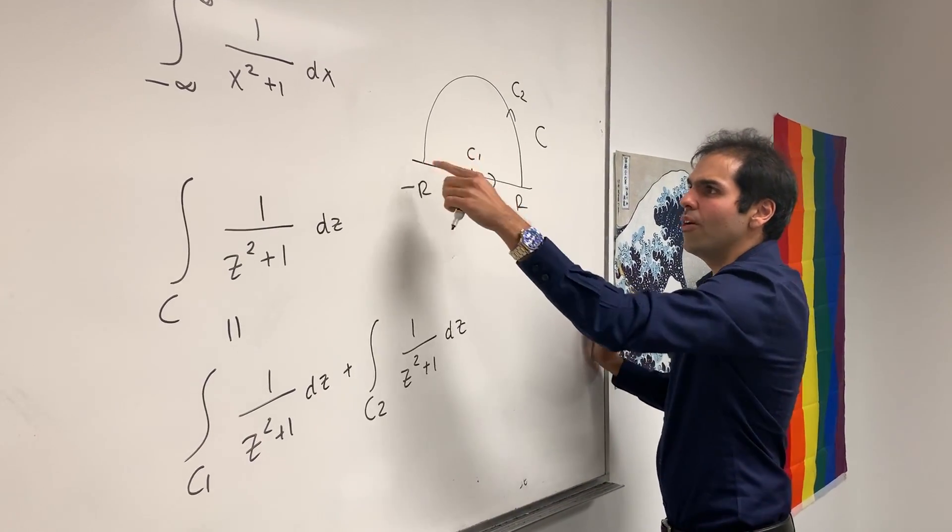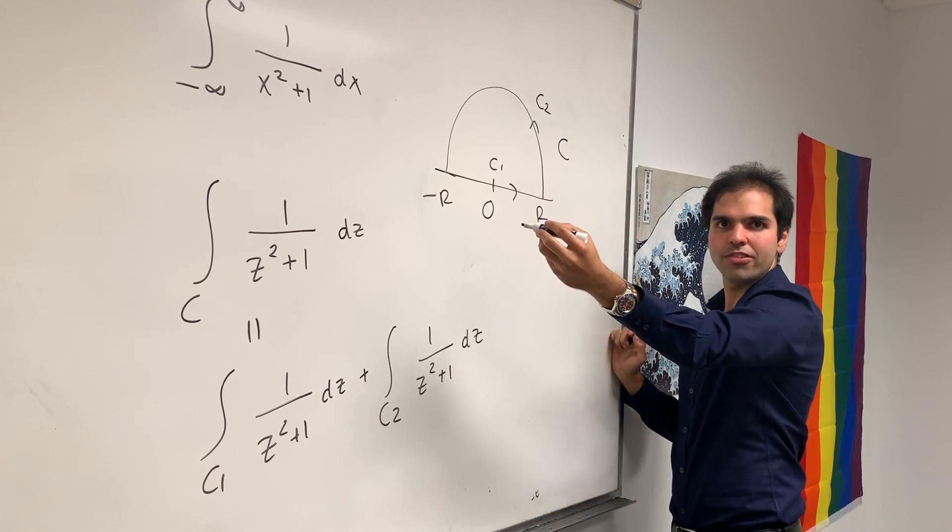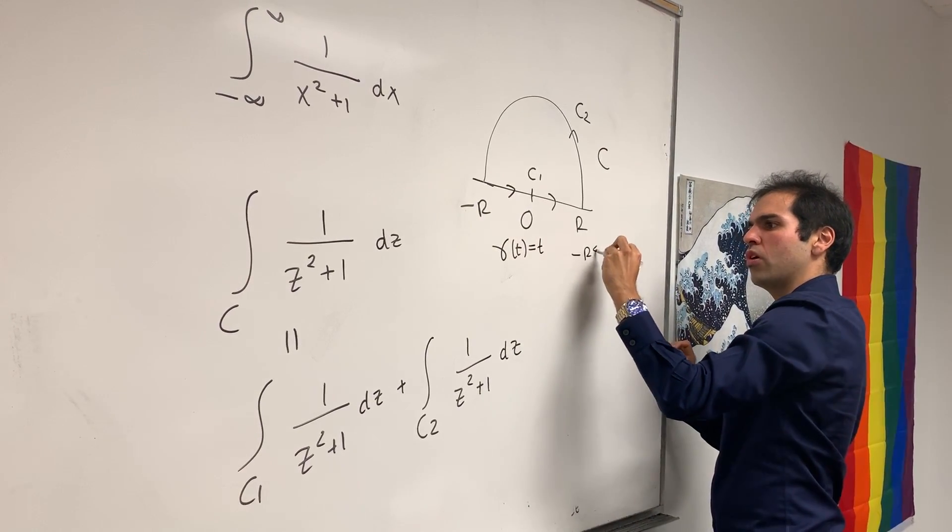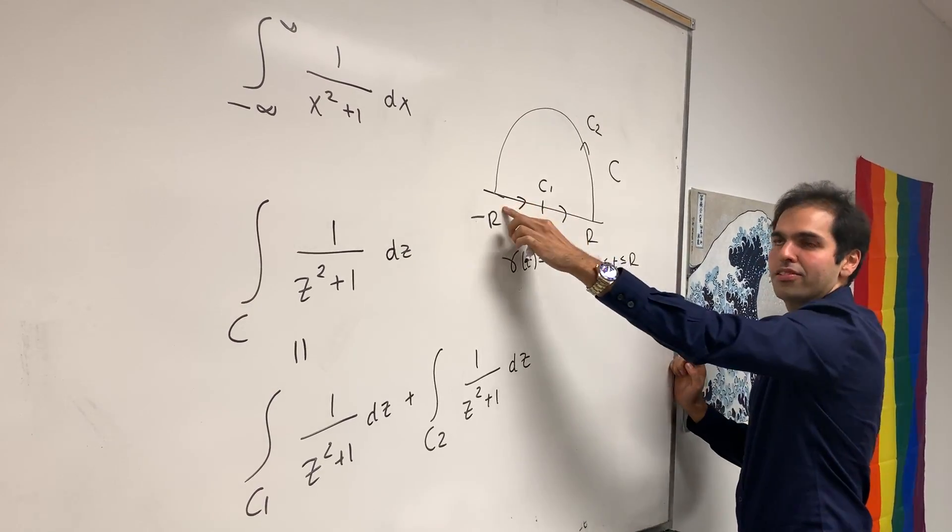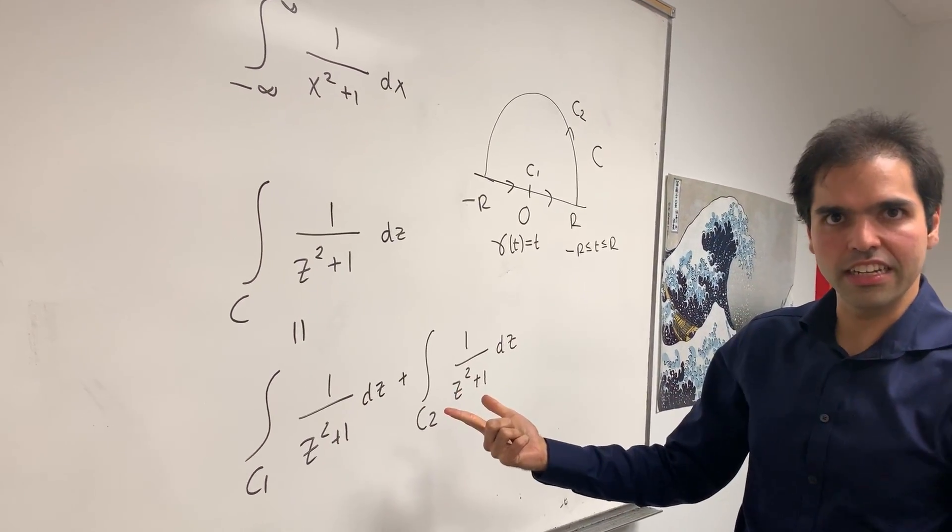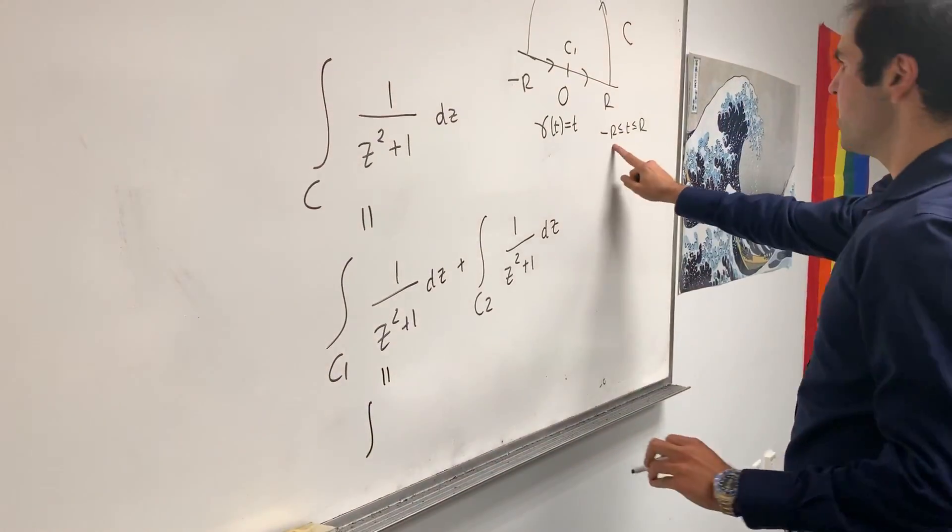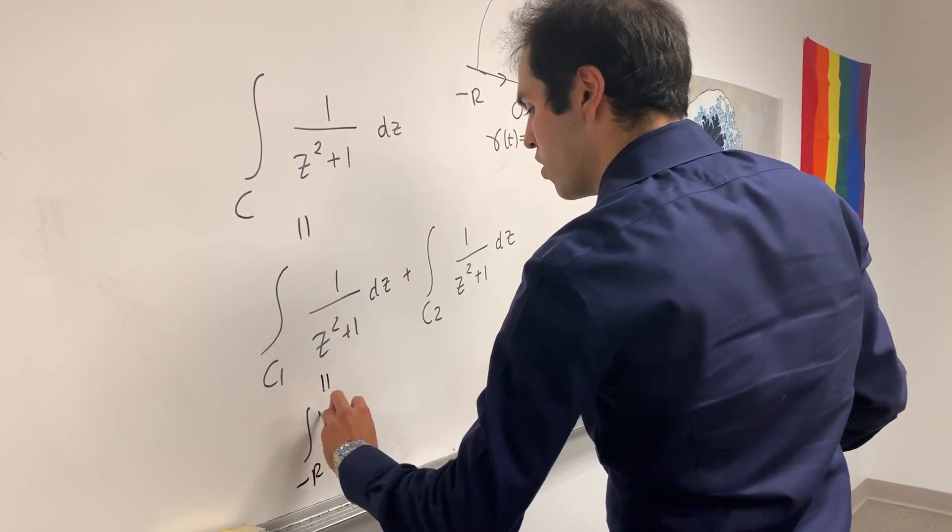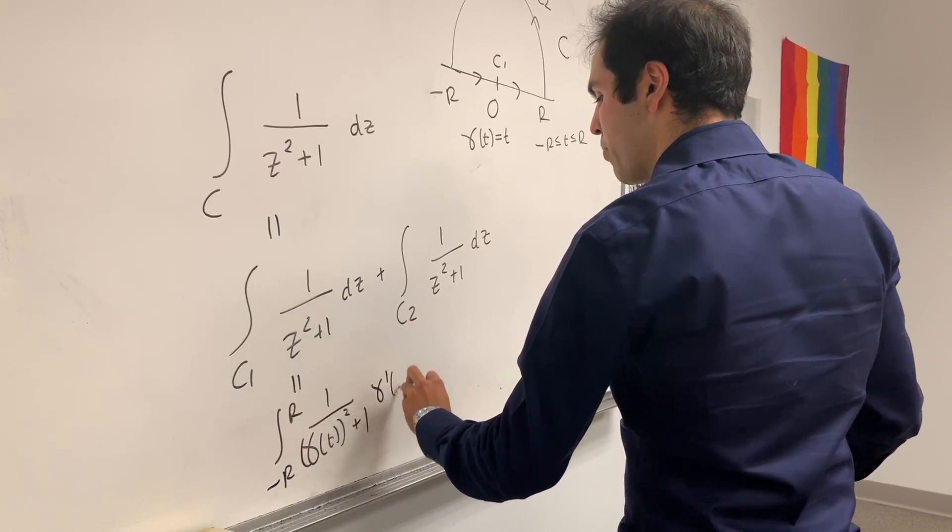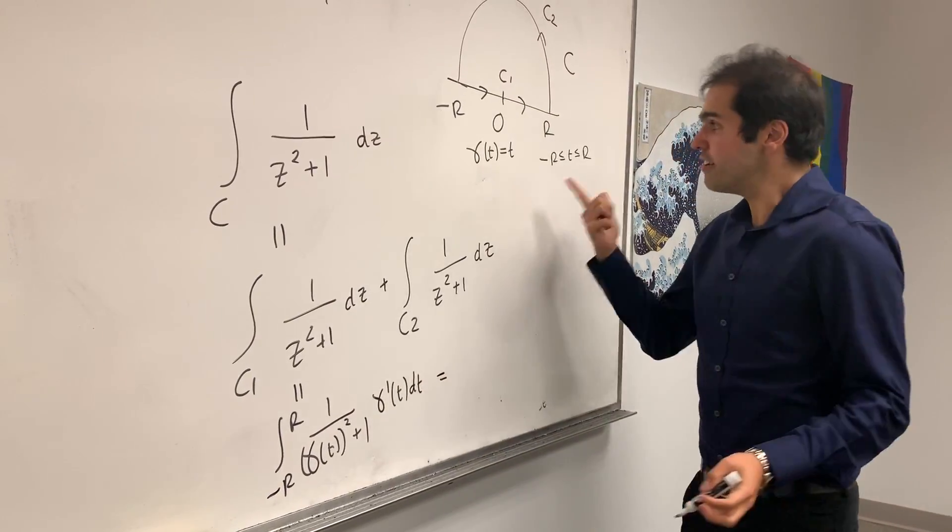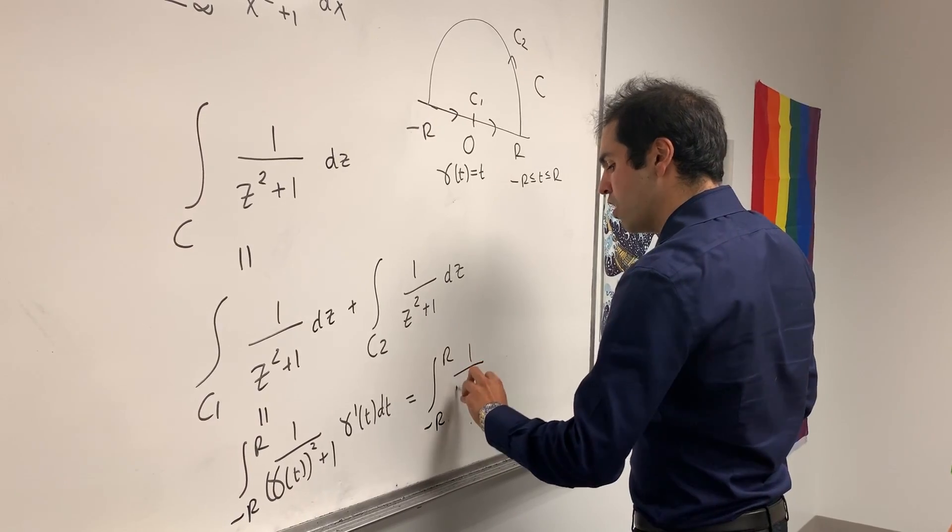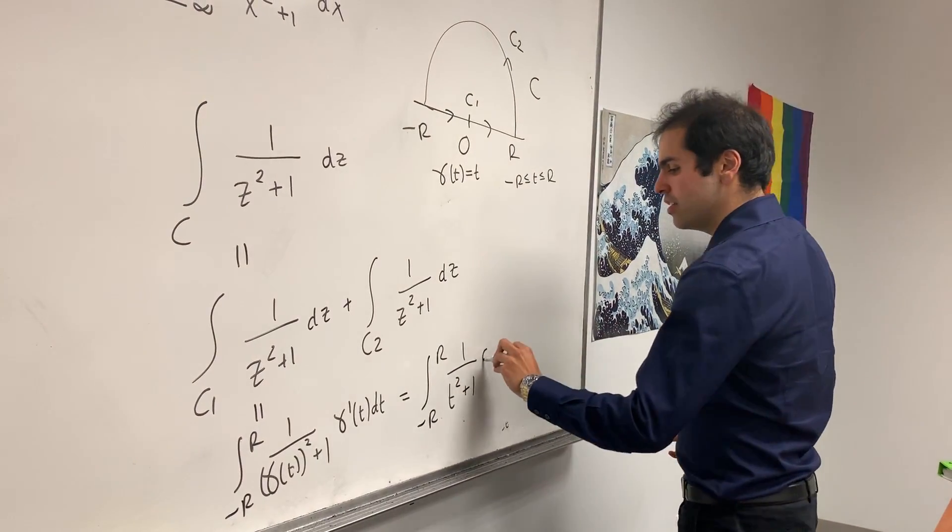Now, what is c1? So it turns out it's very easy to parametrize c1. Namely, let gamma t just be t, where t goes from minus r to r. So that will give us a straight line. It's literally a parametrization of this. And the point is, once you have a parametrization, it's very easy to calculate an integral. Because then the formula is the integral from your parameter minus r to r of 1 over gamma t squared plus 1 gamma prime of t dt.